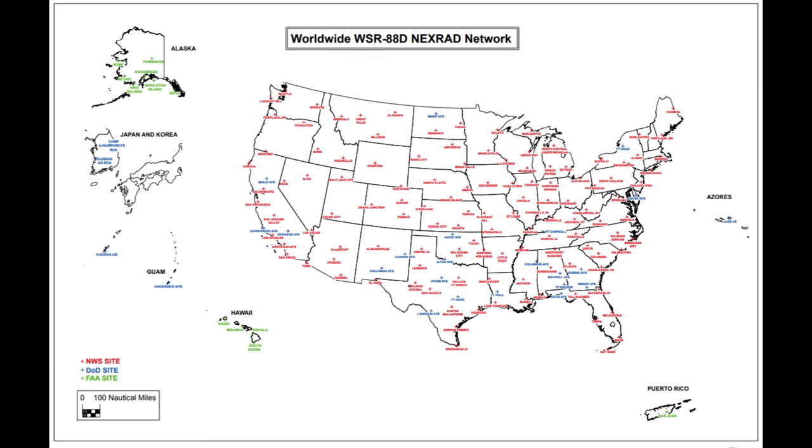This is just one of many instances of these QLCS tornadoes going unwarned. But another reason why tornadoes may go unwarned is because they're located in radar gaps. The United States and its territories have 155 WSR-88D radar stations.